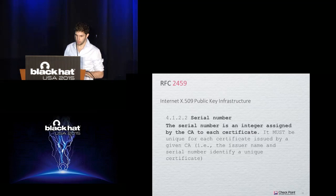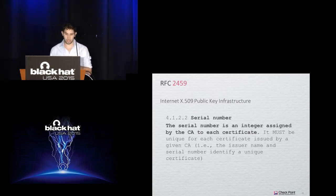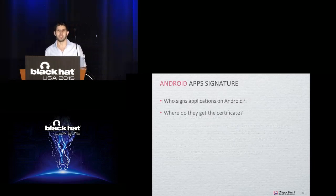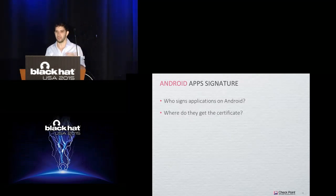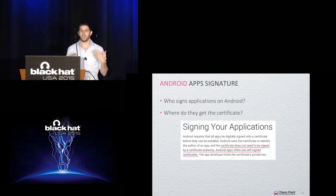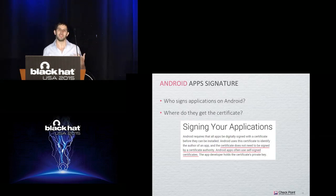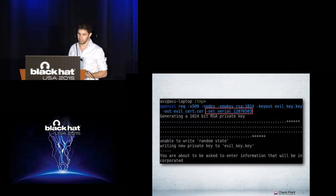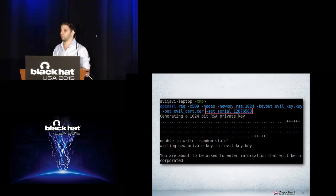The question is: what is the serial number? According to the X.509 RFC, a serial number is an integer assigned by the CA to each certificate. But who is the CA on Android? In Android, every developer is actually their own CA because we use self-signed certificates to sign apps. This means I can create a certificate, set the serial number to match the hard-coded serial number, sign an app with that certificate, and gain full control of the device.